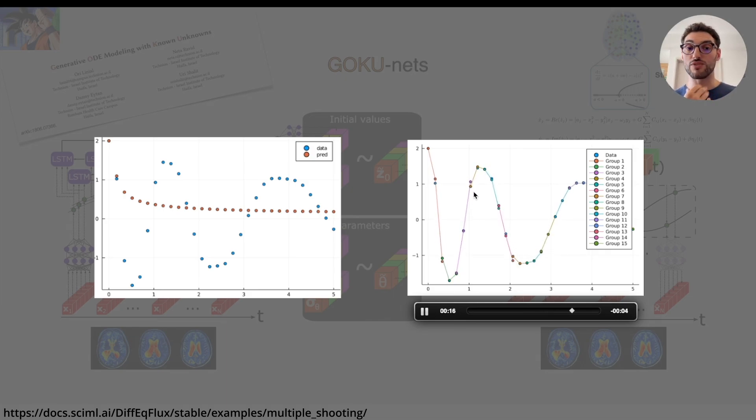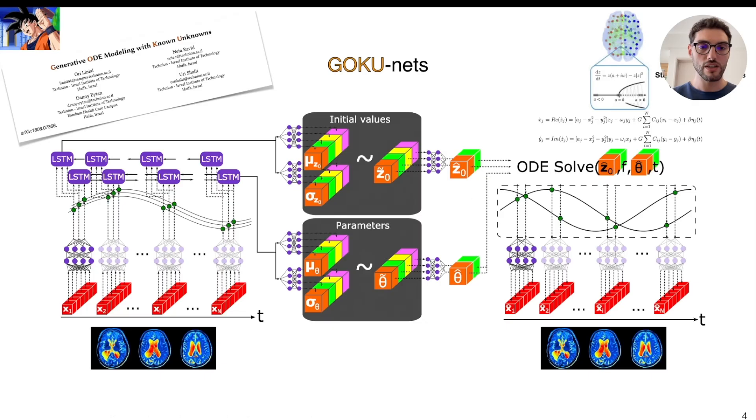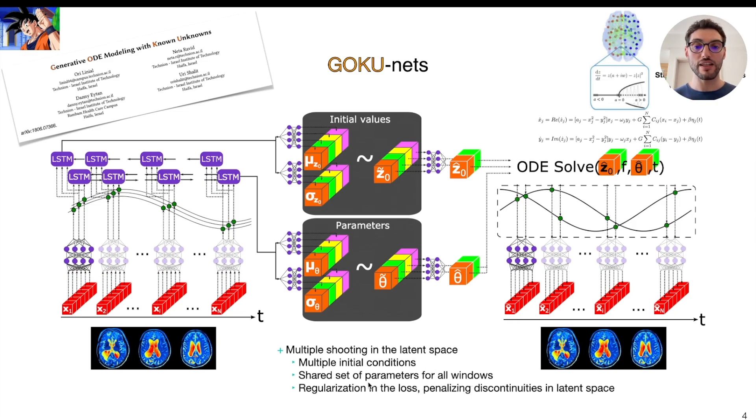But what you can try to do is to impose some continuity between the windows. So we implemented a multiple shooting training strategy in the latent space by using multiple initial conditions, but a shared set of parameters for all the windows, and then imposing continuity with a regularization term in the loss function, penalizing for the discontinuities in the latent space.